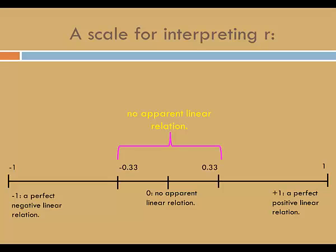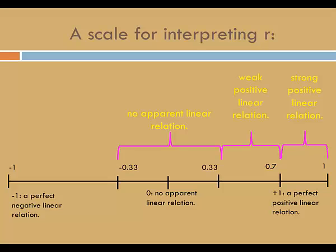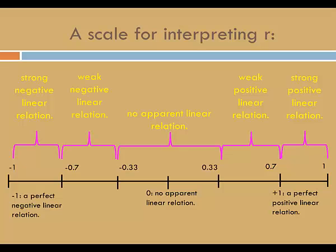Values that are close to 0 indicate no apparent linear relation. Let's say that values between negative 0.33 and positive 0.33 will be interpreted as no apparent linear relation. Values between 0.7 and 1 will indicate a strong positive linear relation, and values in between will indicate a weak positive linear relation. On the opposite end, values from negative 1 to negative 0.7 will indicate a strong negative linear relation, and values in between will indicate a weak negative linear relation. Note that this is not exhaustive — values between 0.9 and 1 are often interpreted as very strong, and values close to 0.7 as moderate or moderately strong.